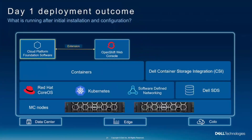To show an example of what you get after deployment — in the case of OpenShift, you have a fully configured OpenShift cluster. It's based on our MC nodes, which everything in the Apex Cloud Platform family is based on. Running Red Hat Core OS, OpenShift for Kubernetes, software-defined networking, and using Dell SDS storage as the backend storage. We connect to that through our container storage integration — our CSI — and you have the ability to run native containers on that.